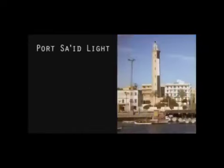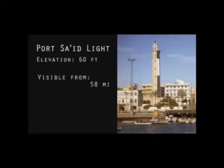Proof 91: The Lighthouse at Port Said, Egypt, at an elevation of only sixty feet, has been seen an astonishing fifty-eight miles away, where, according to modern astronomy, it should be two thousand one hundred and eighty-two feet below the line of sight.